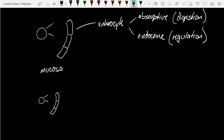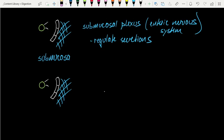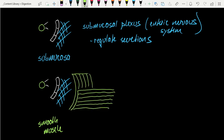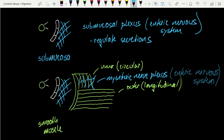Moving outward, we find connective tissue called the submucosa. Within this connective tissue, we find aspects of the enteric nervous system called the submucosal plexus, which is all about regulating glandular secretions. Continuing outward, we run into smooth muscle — this looks a little different depending on whether we're in the stomach, small intestine, or large intestine. In the small intestine, it consists of two layers: an inner circular layer and an outer longitudinal layer. Sandwiched between these two is a complex of neurons called the myenteric nerve plexus, which is the other half of the enteric nervous system and is all about peristaltic contraction.